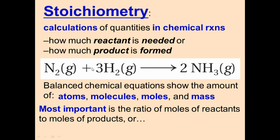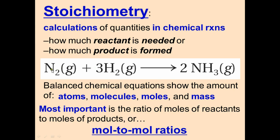The most important concept in stoichiometry is the ratio of moles of reactants to moles of products, otherwise known as mole-to-mole ratios. Mole-to-mole ratios are the ratios of moles of one substance to another, and this is important for converting between different substances.